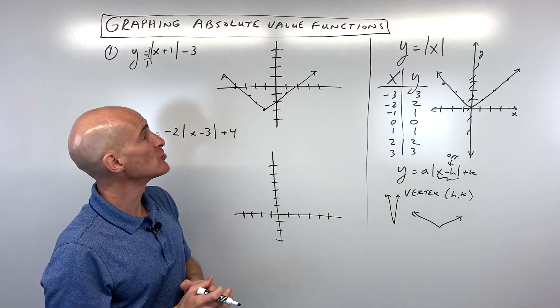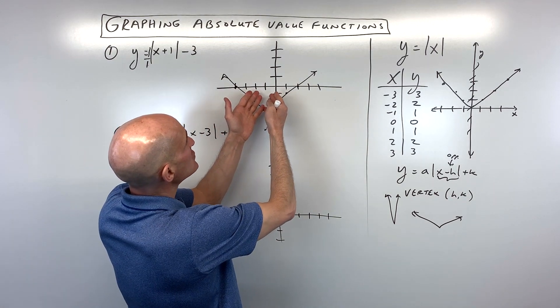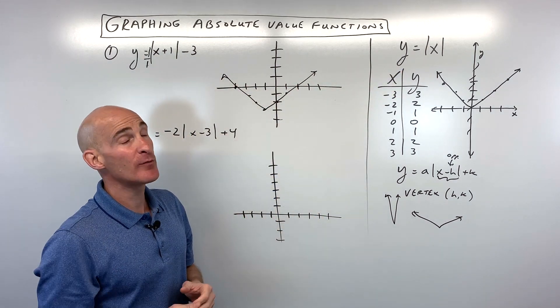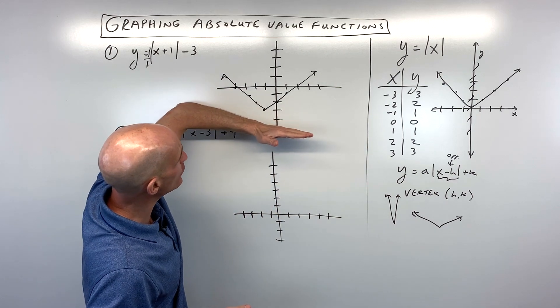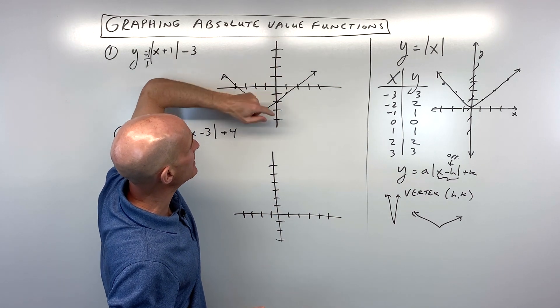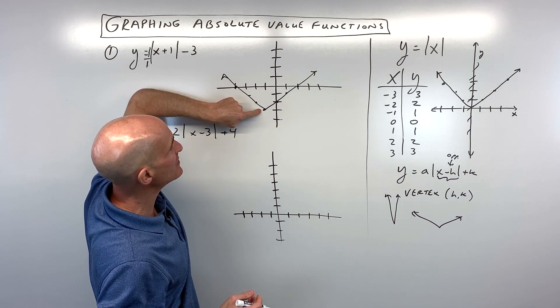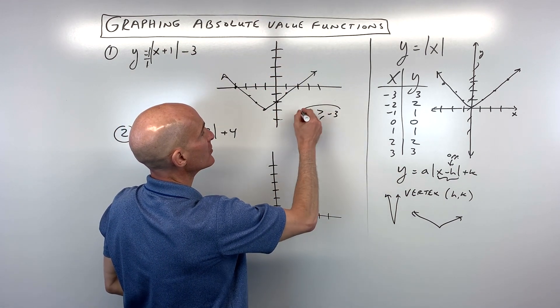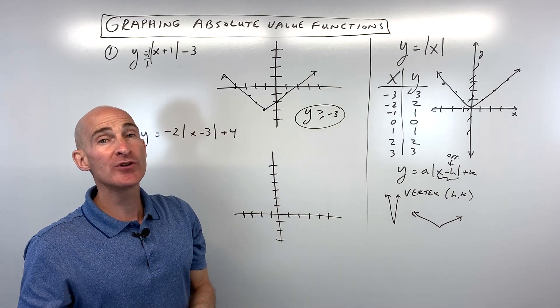Now if you're interested in finding the domain and range, the domain is what the x values can be. And you can see that this graph is going to the left and the right forever and ever. So the domain would be all real numbers. But the range, those are what the y values can be. And here you can see that the lowest y can be is negative three. Or greater, so for the range we'd say y is greater than or equal to negative three. Okay, let's do another example.